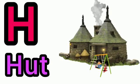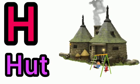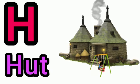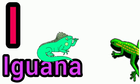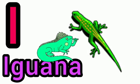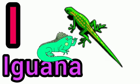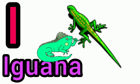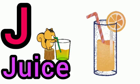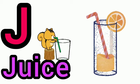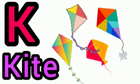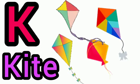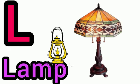H for hut. I for iguana. J for juice. K for kite. L for lamp.